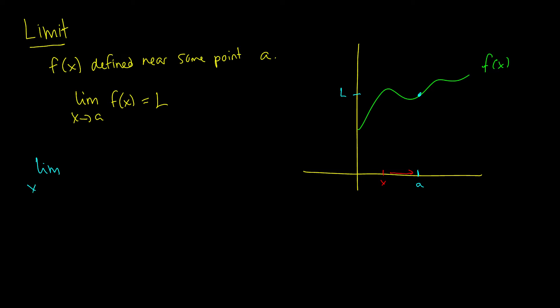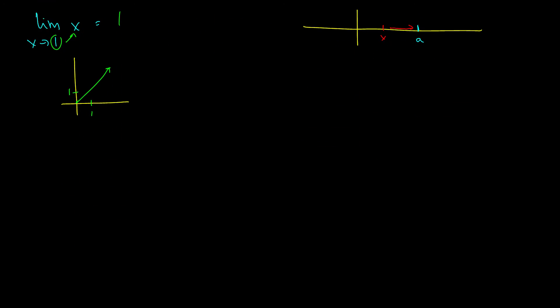Let's find the limit as x approaches 1 of x. This is a very easy graph — when x is equal to 1, f of x is equal to 1, so we basically plug 1 into x and we get 1. You need to understand this as the idea of a limit before moving on.